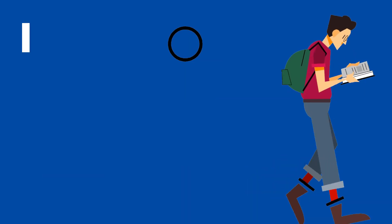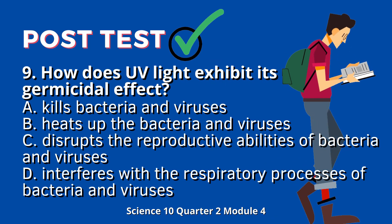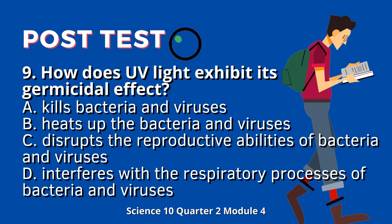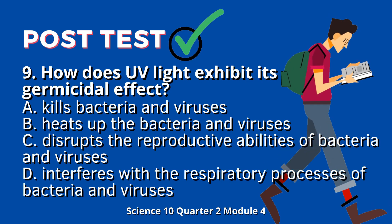Question 9: How does UV light exhibit its germicidal effect? A. Kills bacteria and viruses. B. Heats up the bacteria and viruses. C. Disrupts the reproductive abilities of bacteria and viruses.